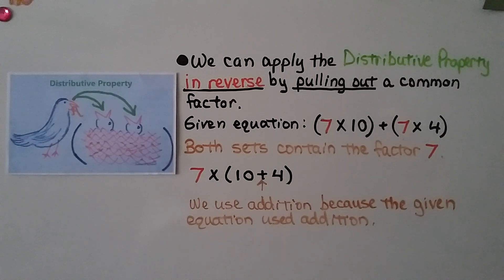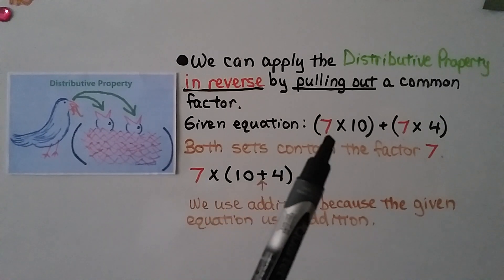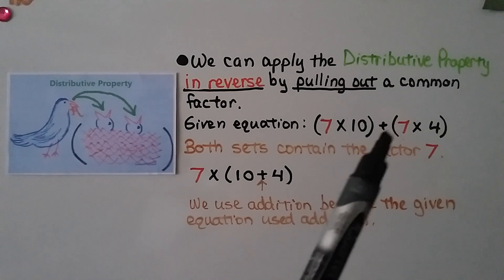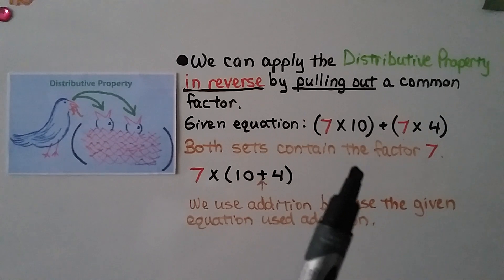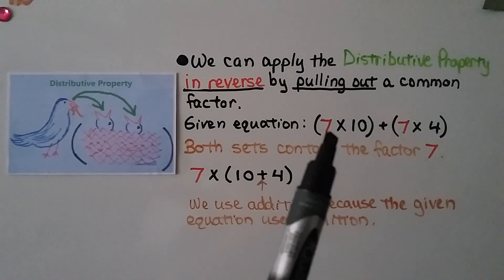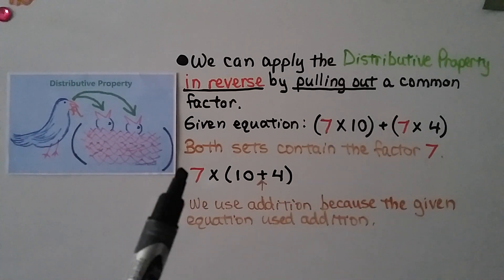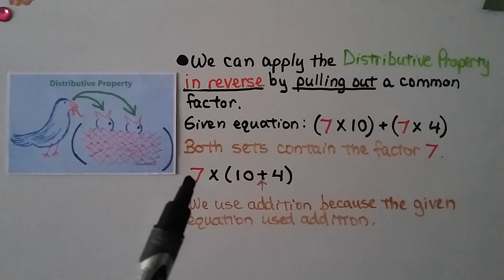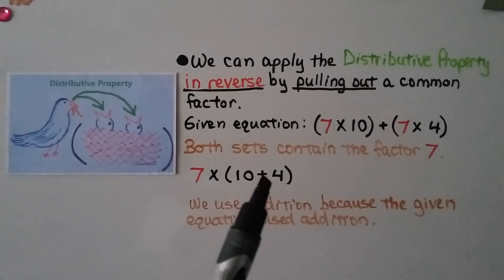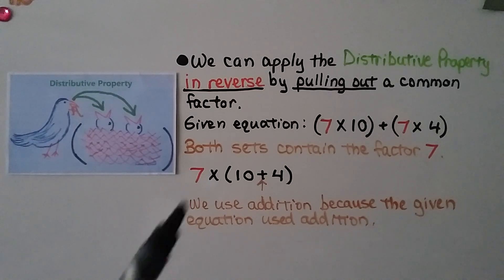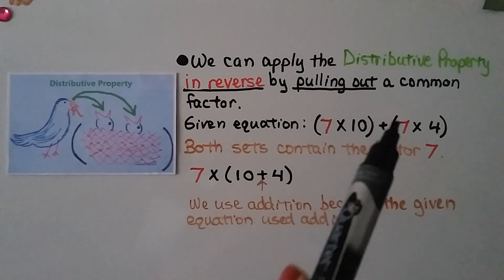We can apply the distributive property in reverse by pulling out a common factor. We have the given equation 7 times 10 plus 7 times 4. Both sets of parentheses contain the factor 7, so we can pull that 7 out and have 7 times 10 plus 4. We use the addition sign because the given equation uses addition.